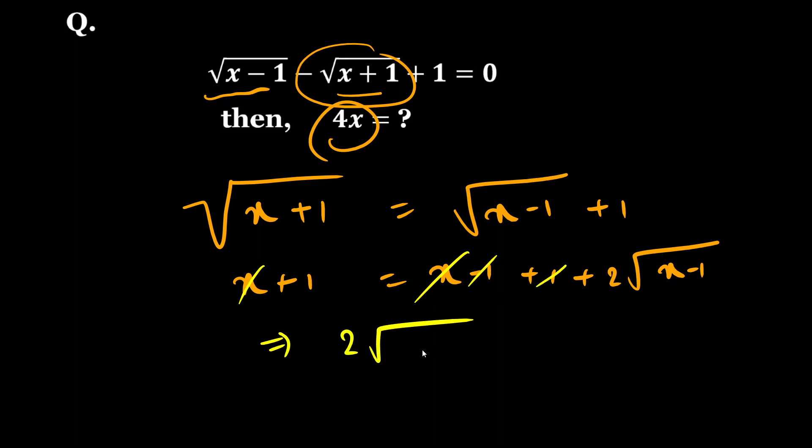I got 2 square root of x minus 1 equal to 1. I can take this 2 to the right hand side, so from here I will get root under x minus 1 equal to half. Now if I square both sides,